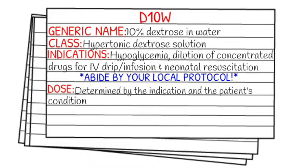Today's medication is called D10W, most commonly referred to in the EMS field as D10 — 10% dextrose in water. It falls under the class of hypertonic dextrose solutions.